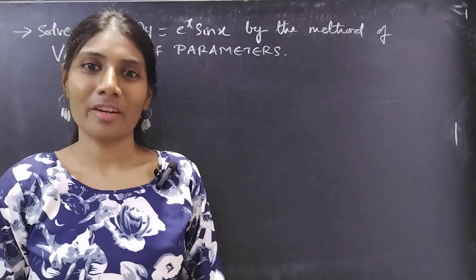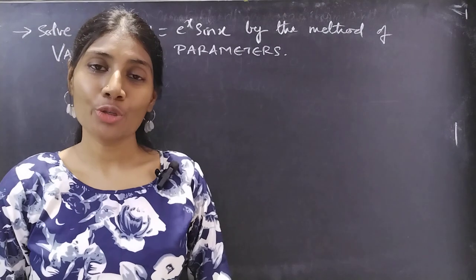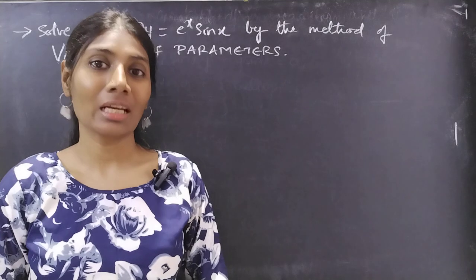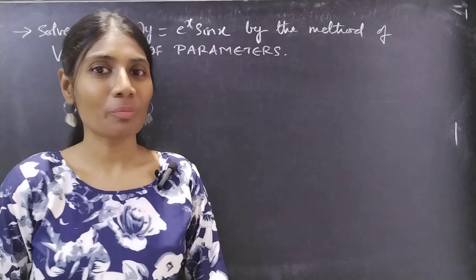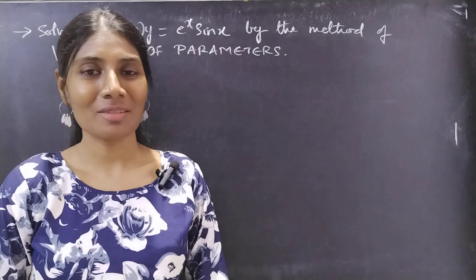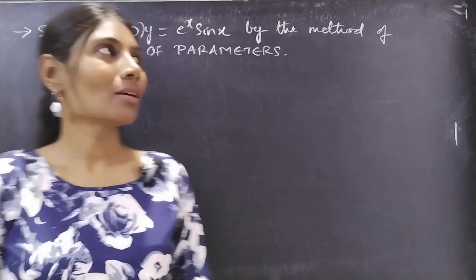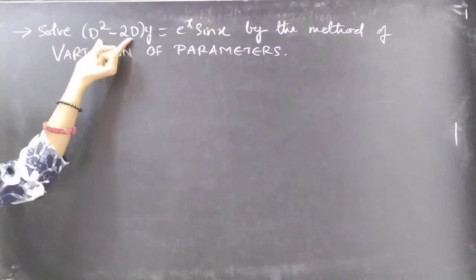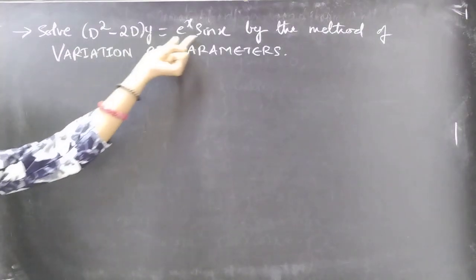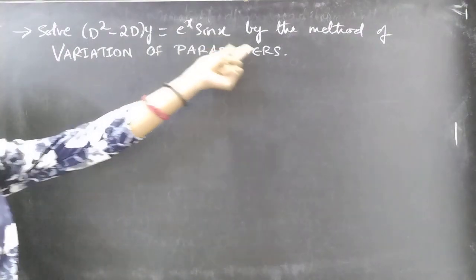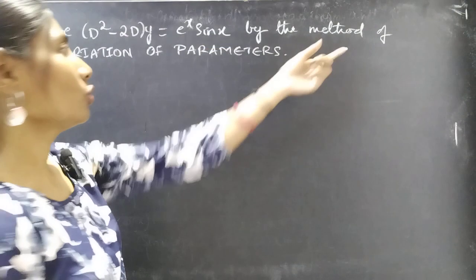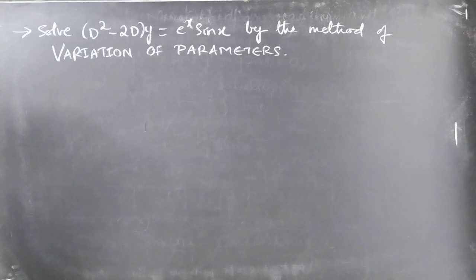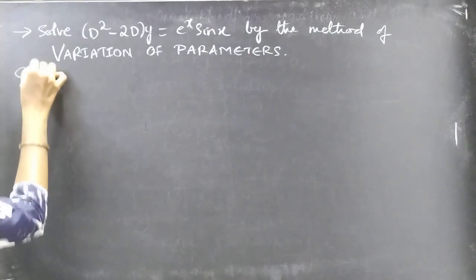Hello everyone, this is Jay Kalpana here. In this video we are going to solve a differential equation using the variation of parameters method. The problem is: solve (D² - 2D)y = eˣsinx by the method of variation of parameters.